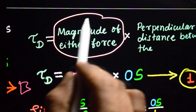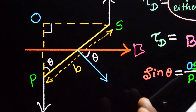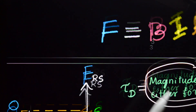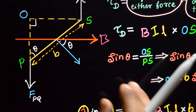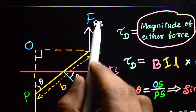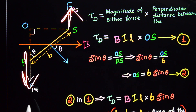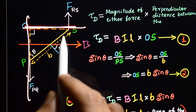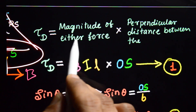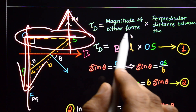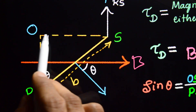We can express the deflecting couple (torque) as the magnitude of either force multiplied by the perpendicular distance between the forces. Viewing the coil from below, the two forces F_RS and F_PQ are equal in magnitude but opposite in direction, with a perpendicular distance OS between them. Therefore, torque τ = Bil × OS. This is our first equation.